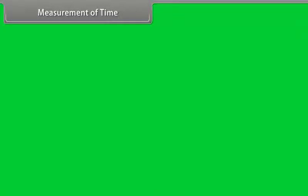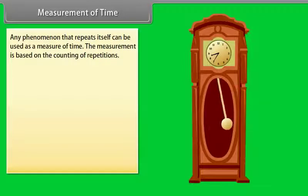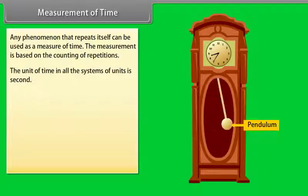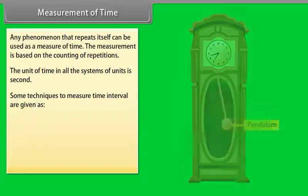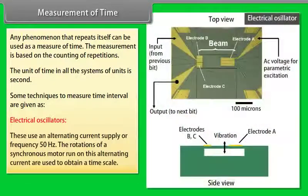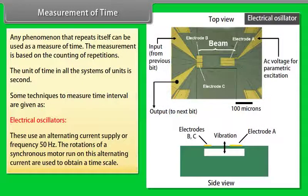Measurement of time. Any phenomenon that repeats itself can be used as a measure of time. The measurement is based on the counting of repetitions. The unit of time in all the systems of units is second. Some techniques to measure time intervals are given as: electrical oscillators. These use an alternating current supply of frequency 50 hertz. The rotations of a synchronous motor run on this alternating current are used to obtain a time scale.